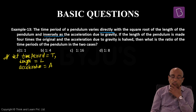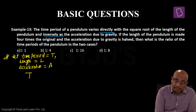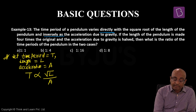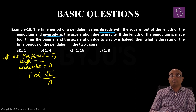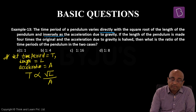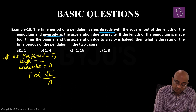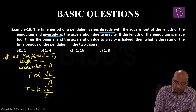Question का पहला line में लिखा है time period T जो है वो directly proportional है square root of length, और inversely proportional है acceleration due to gravity। इसे हम लिखेंगे T is equal to K into square root of L upon A, जहाँ K constant of proportionality है।